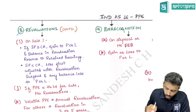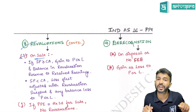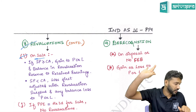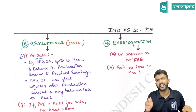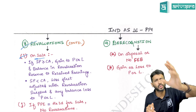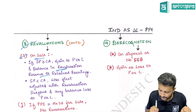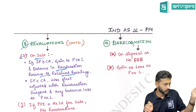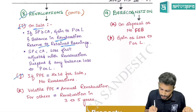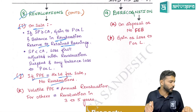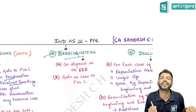Revaluation reserve is required only as long as the asset is held. On de-recognition — whether through sale, write-off, or any other means — any balance in revaluation reserve is transferred to retained earnings. If PP is held for sale, IND AS 105 is triggered and revaluation does not apply.